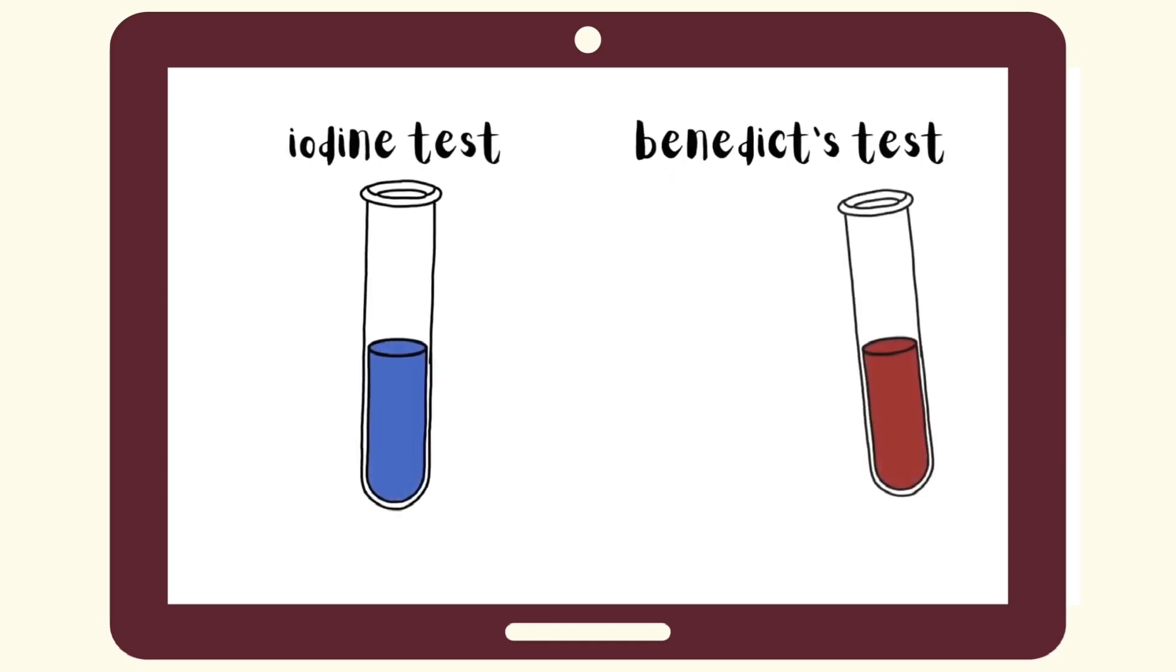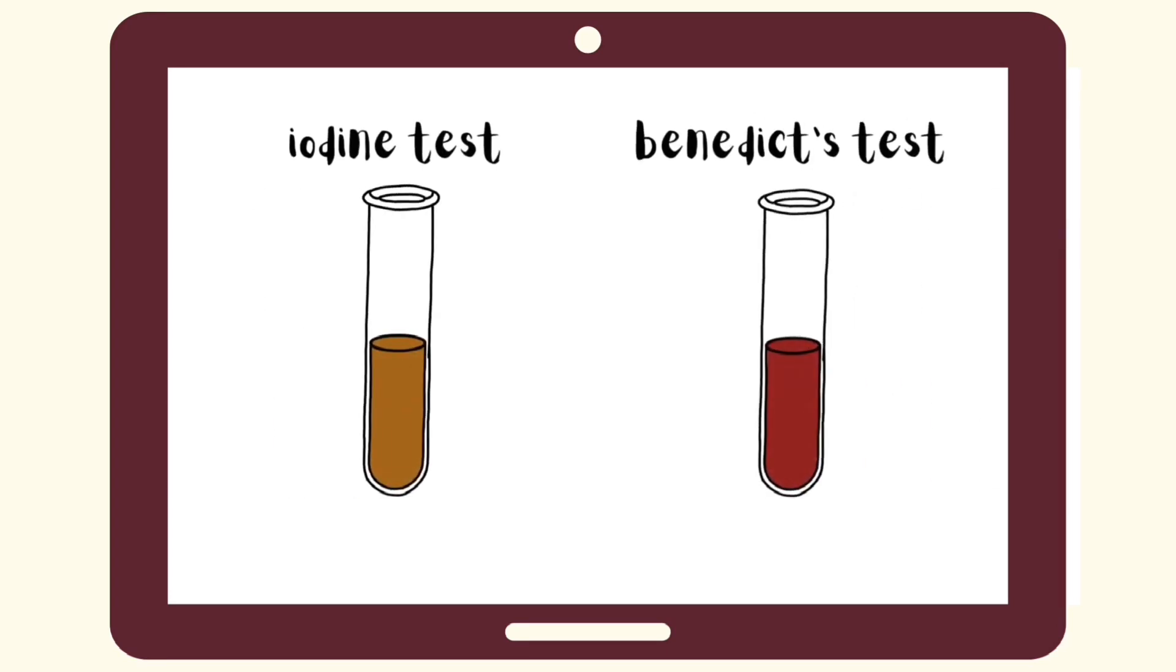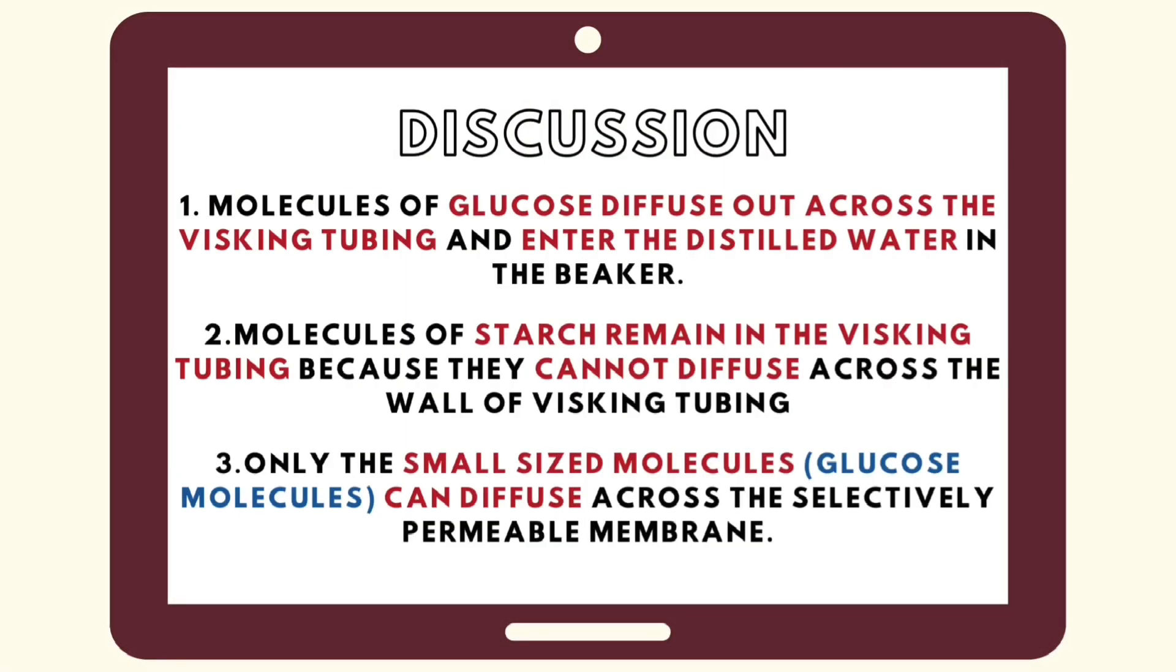For the visking tubing, the results for the iodine test will form a dark blue solution and while for the Benedict test, a brick red precipitate solution will form which shows the presence of glucose. Next, for the beaker, the iodine test will form a yellowish brown solution and meanwhile, for the Benedict test, a brick red precipitate solution will form.